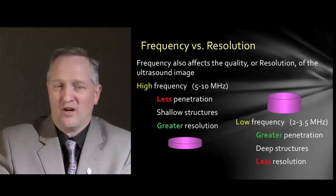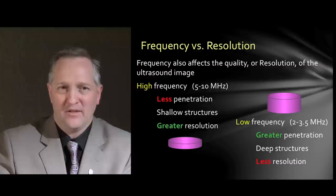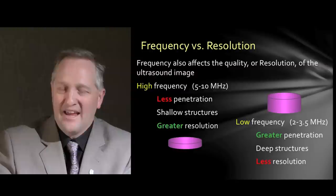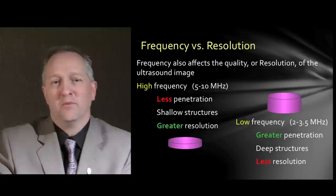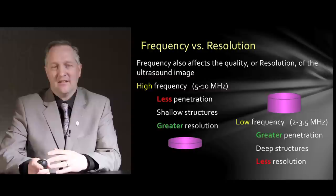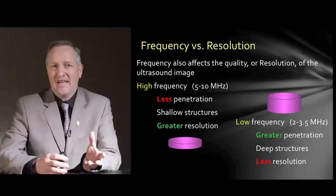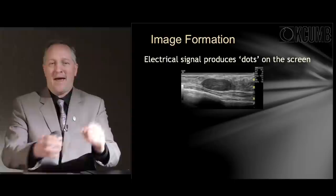The benefit of a high-frequency crystal is that since the echo returns faster, you get better resolution on screen. Conversely, a low-frequency thicker crystal vibrates at a lower cycle and goes deeper into tissue because the wavelength is spread out, giving it greater penetrating ability. Low-frequency ultrasound allows you to image deep structures, but there are tradeoffs — you get less of the echo back, resulting in less resolution with the lower frequency vibration.